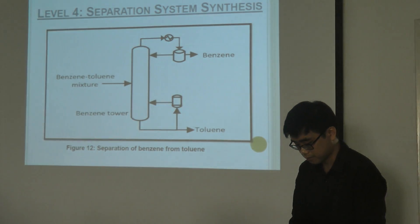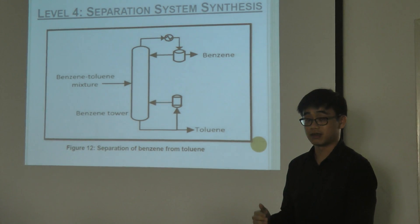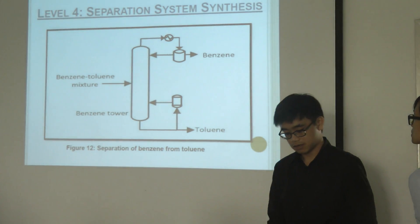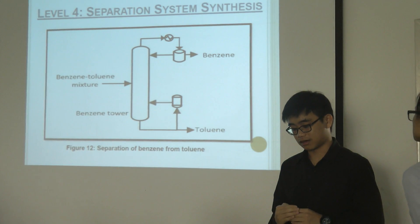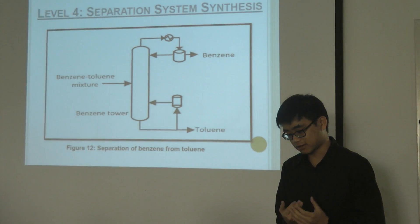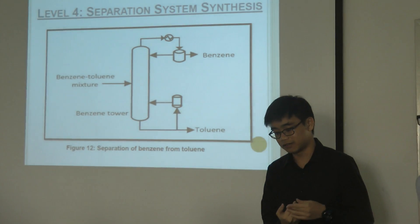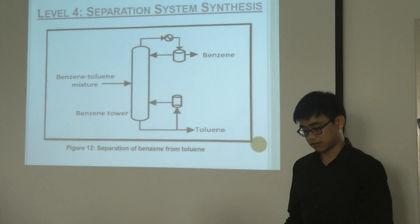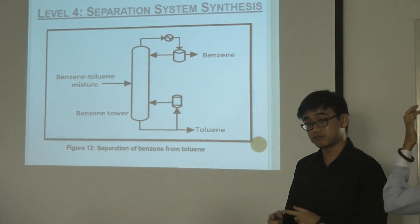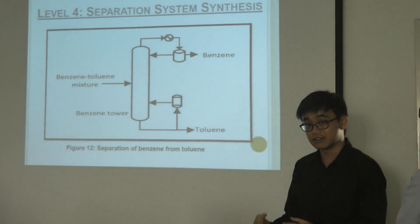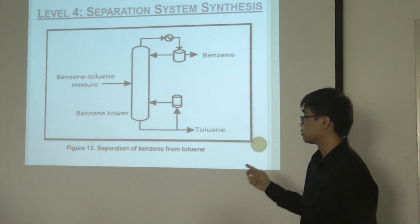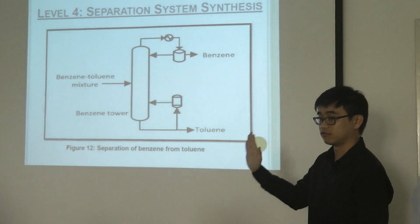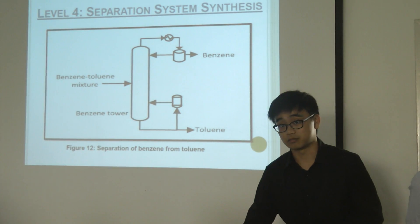Lastly, here is the separation between toluene and benzene, which is the desired product. Benzene has a boiling point of 80°C and toluene has a boiling point of 110°C. Based on the heuristic rule, the cheapest and simplest distillation should be done last — that is why this step is placed at the end, where we recover our desired product.